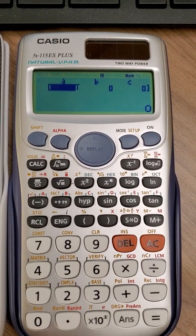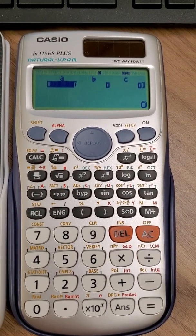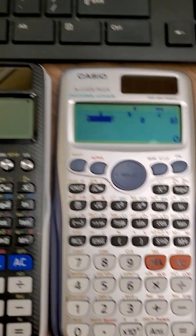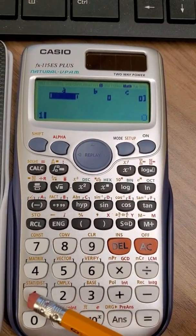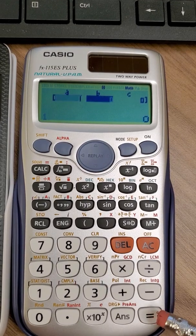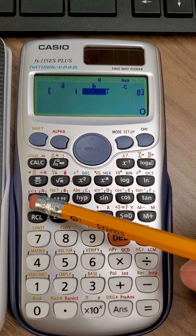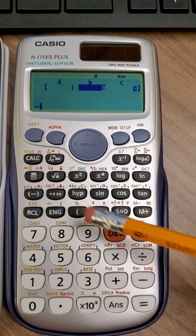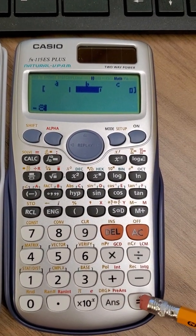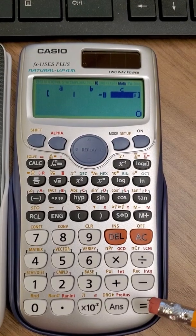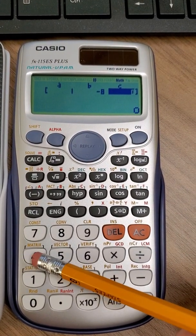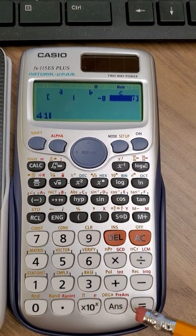Now from the original problem we know that the value of a is 1. So let's push 1 and then equals. The coefficient of x is negative 8. Make sure we use the negative button and 8 equals. And the constant is 41 equals.